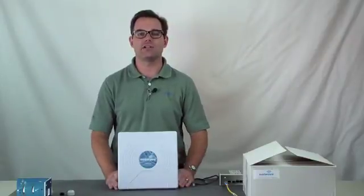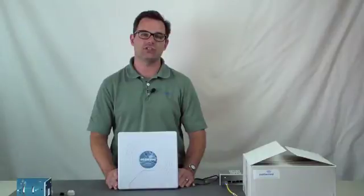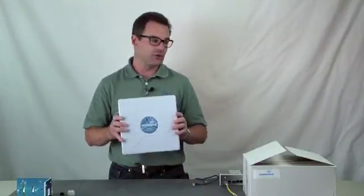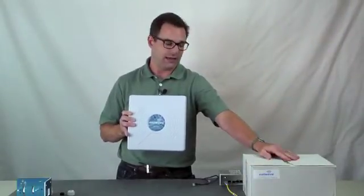Alright, let's get started installing the NWK-1 Ethernet wireless transmission system from ComNet. When you order the NWK-1, you're going to get two boxes: a box for the access point and a box for the client.